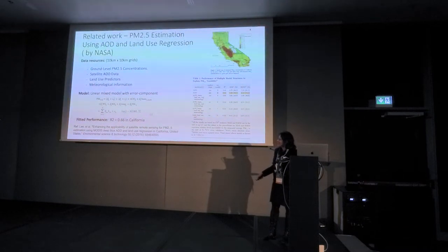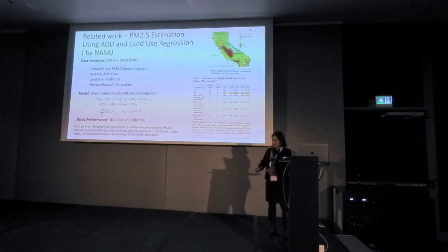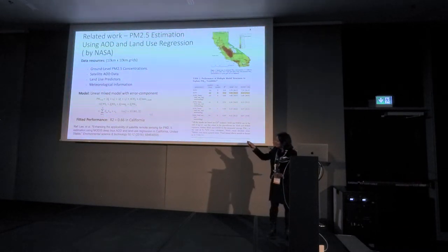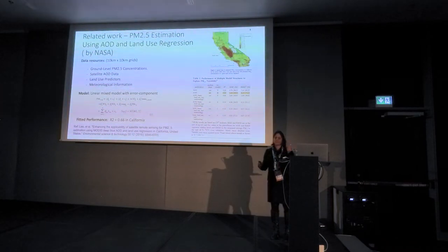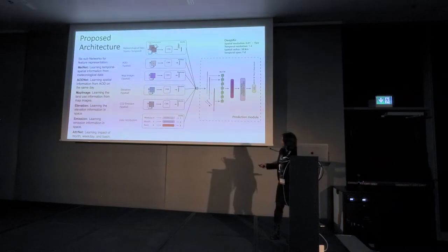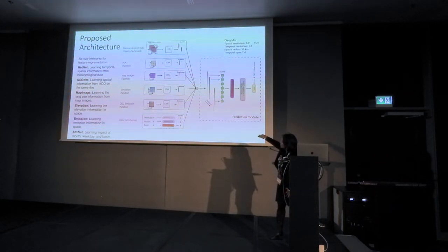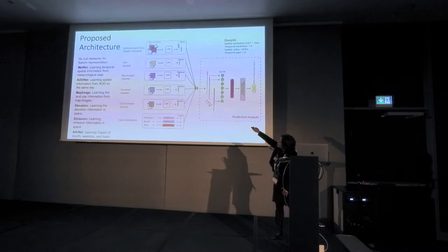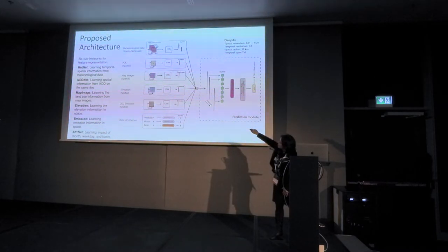They have a way to introduce land use in a linear model. We thought it can be done better with deep learning technologies. What we do is a collection of convolutional neural networks to introduce all the data sets: aerosol optical depth, meteorological data, map images, elevation, and emissions.